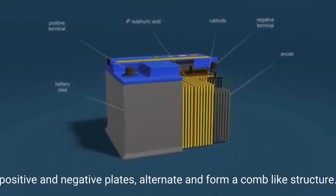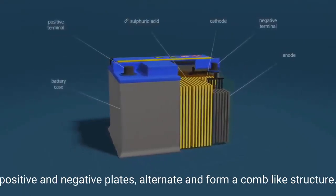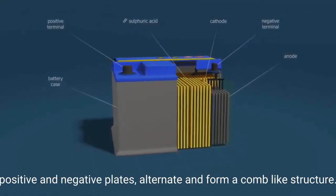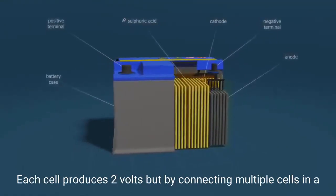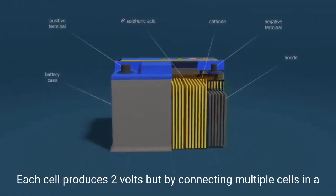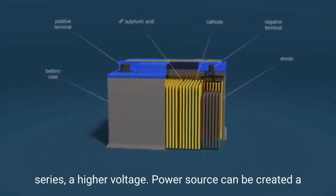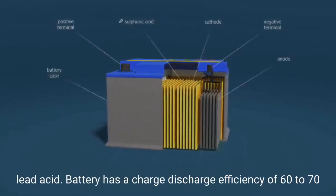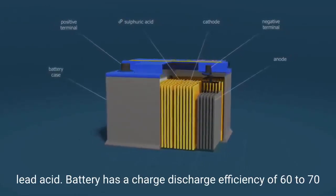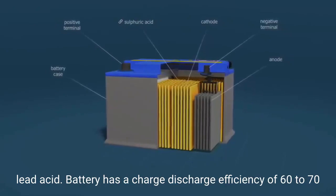Within these cells, positive and negative plates alternate and form a comb-like structure. Each cell produces two volts, but by connecting multiple cells in series, a higher voltage power source can be created. A lead-acid battery has a charge-discharge efficiency of 60-70%.